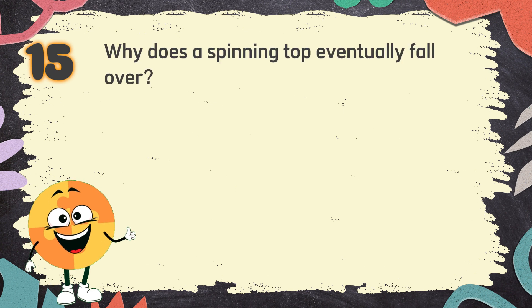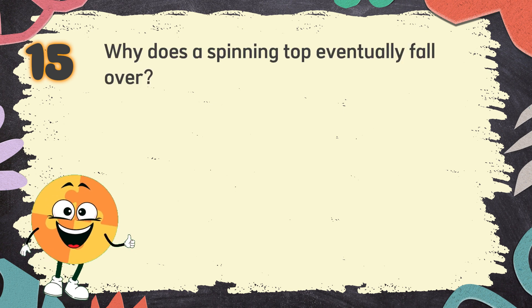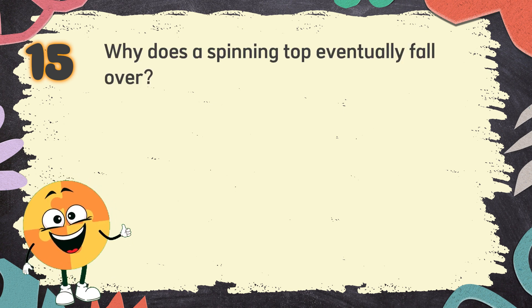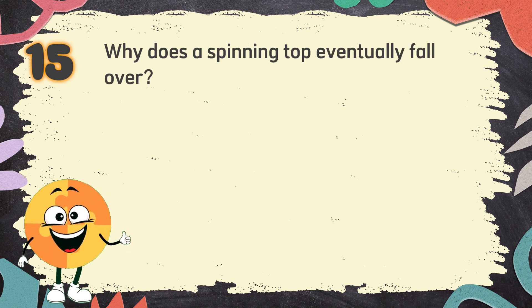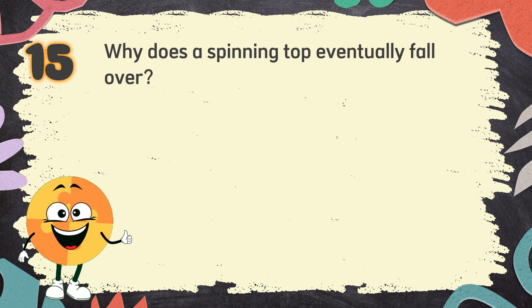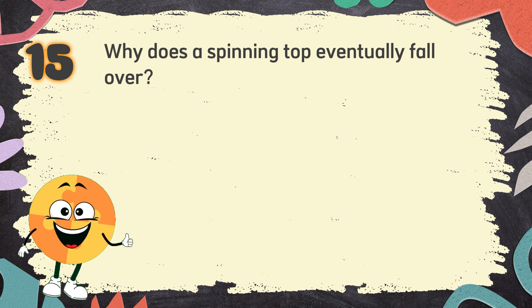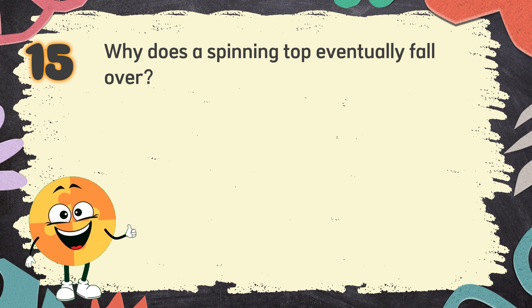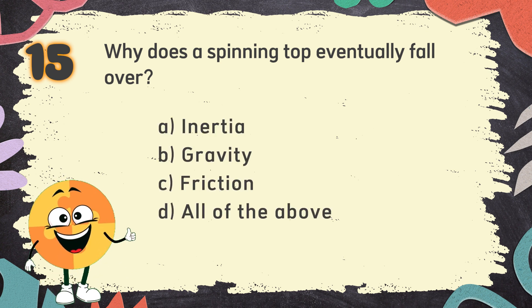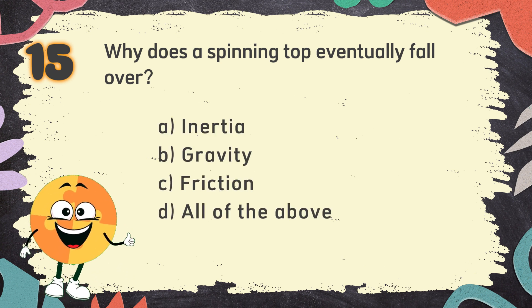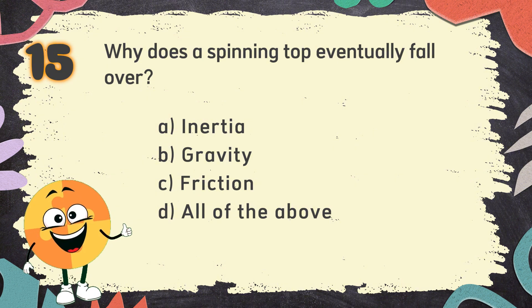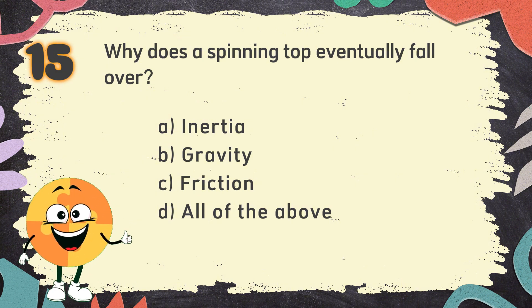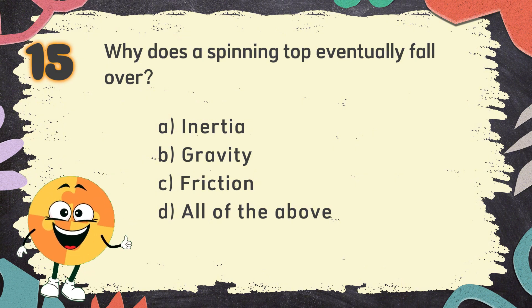Number 15. Why does a spinning top eventually fall over? The choices are: A. Inertia, B. Gravity, C. Speed and friction, D. All of the above.